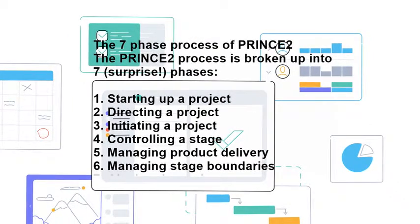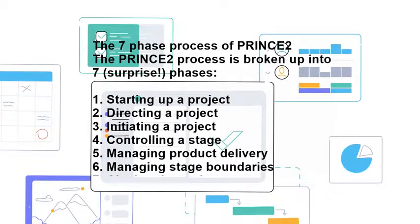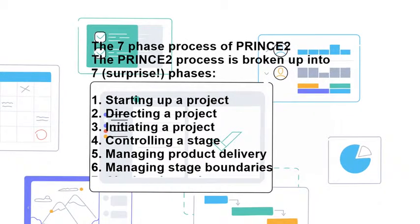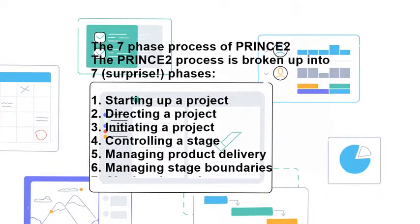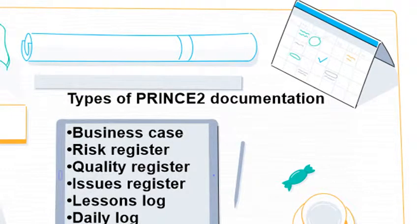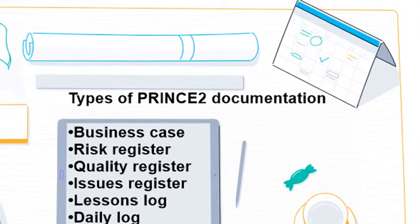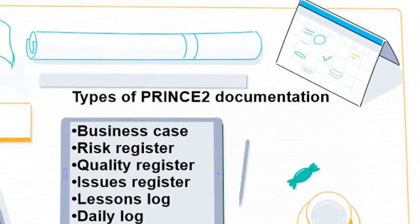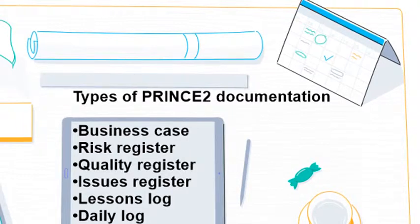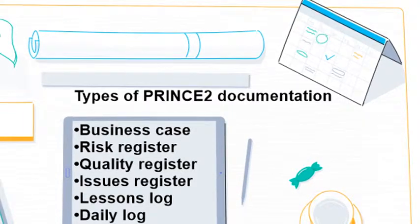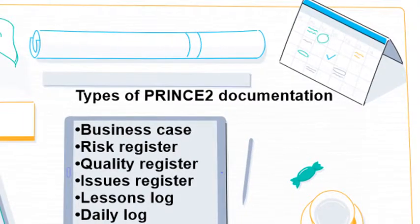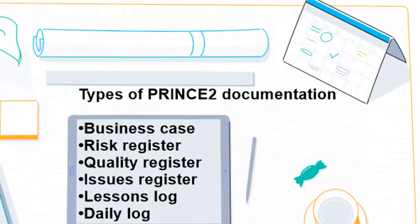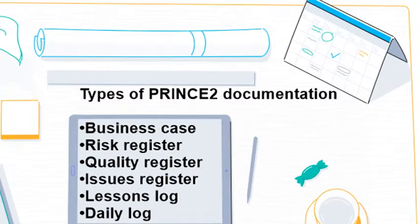The fifth phase is Managing Product Delivery. The project manager checks progress against the project brief and makes sure deliverables meet PRINCE2 quality expectations. The project board evaluates completed work packages and either approves them or requests revisions and changes.